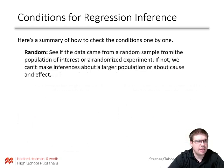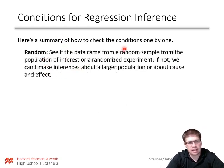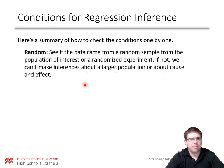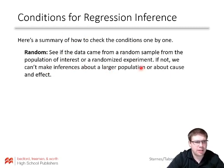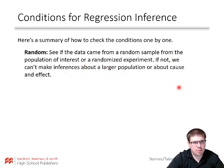For the random condition: see if the data come from a random sample from the population of interest or a randomized experiment. If not, we can't make inferences about a larger population or about cause and effect.